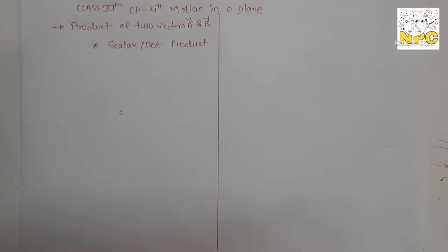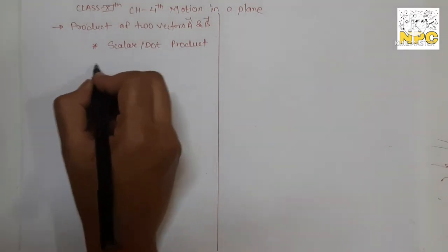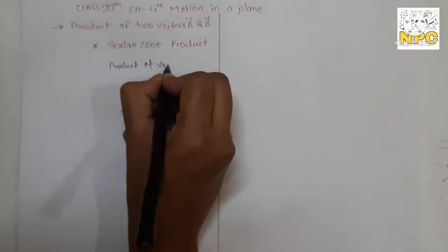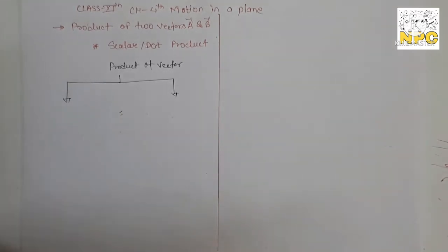In the last video lecture, we covered addition and subtraction of vectors — these are all mathematical tools. If you are given two vectors, how can you do addition and subtraction? But in today's video lecture, we will learn how to do the product of two vectors. If you have two given vectors, the product of two vectors is of two types — the result can be either a vector or a scalar.